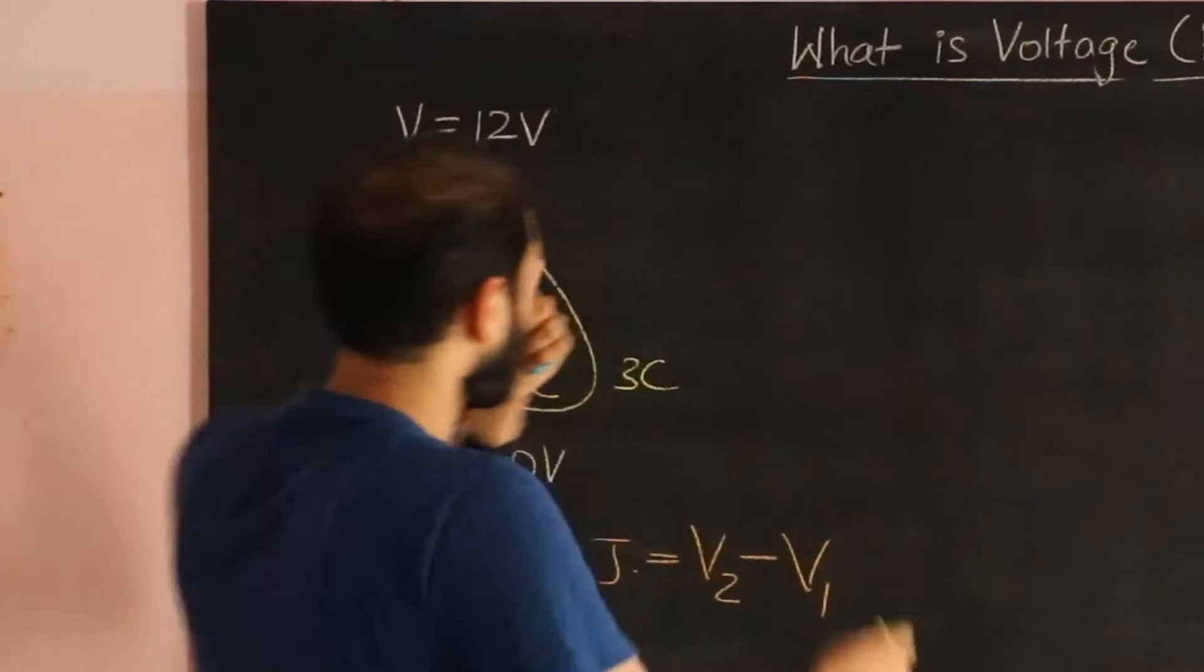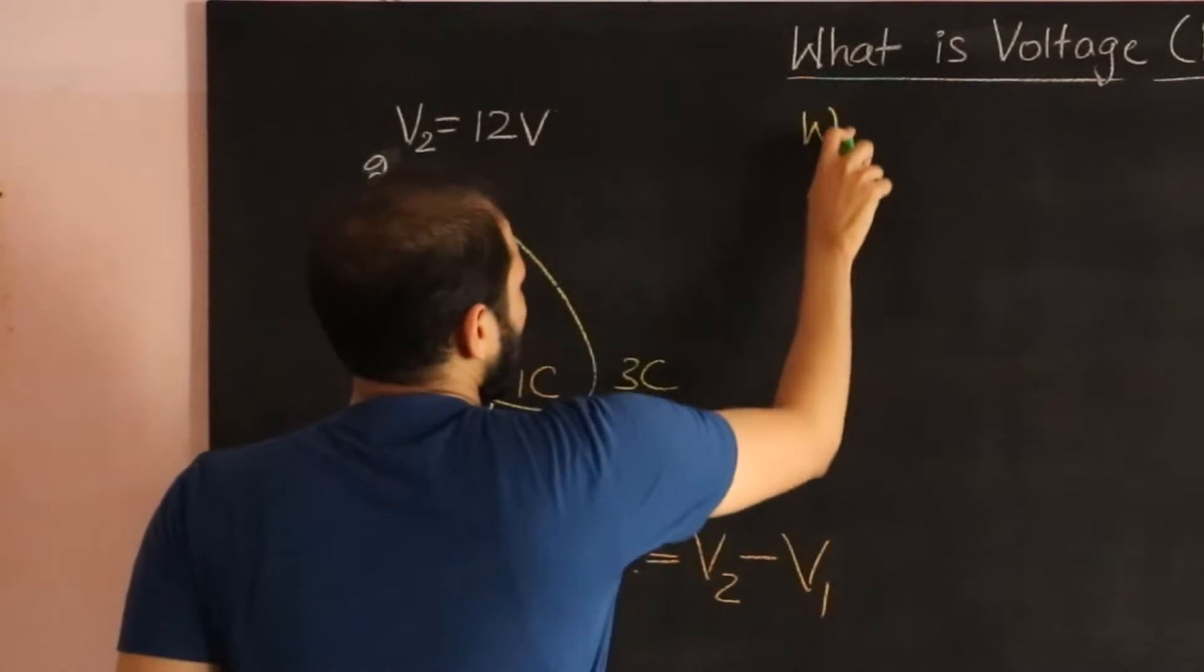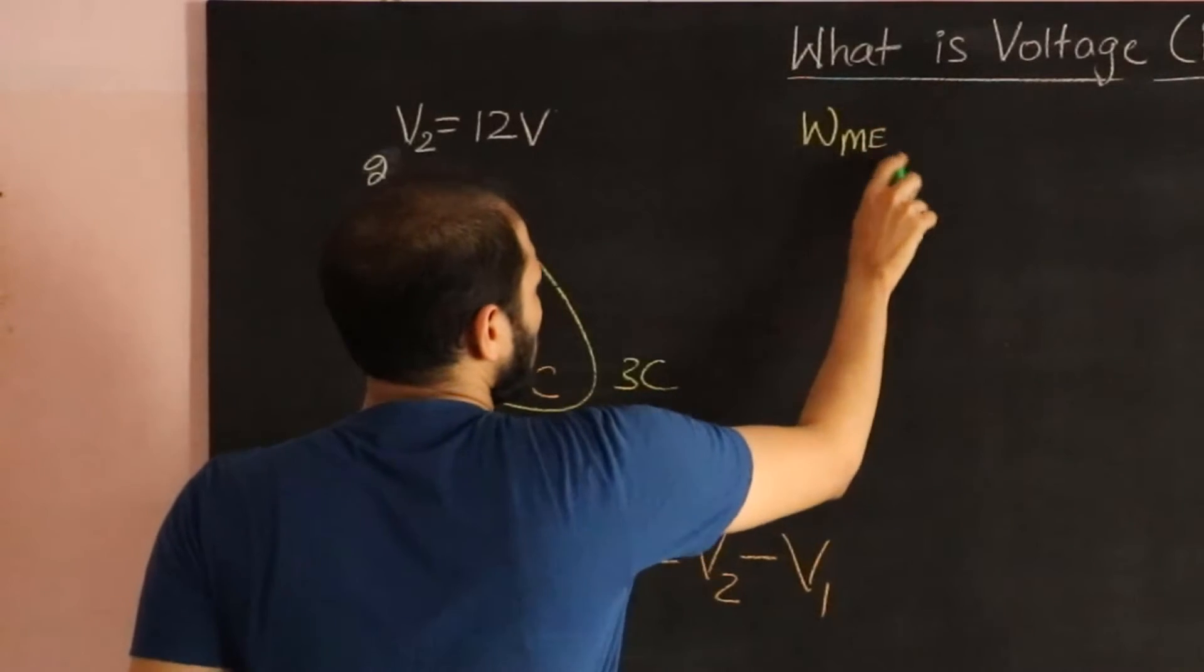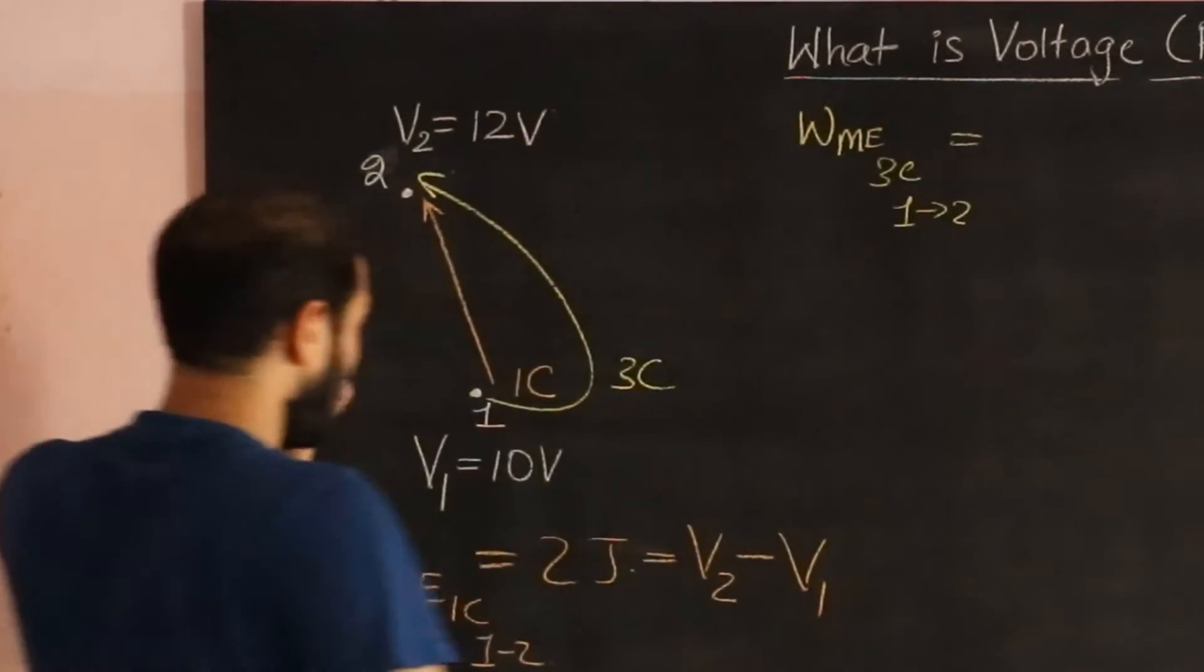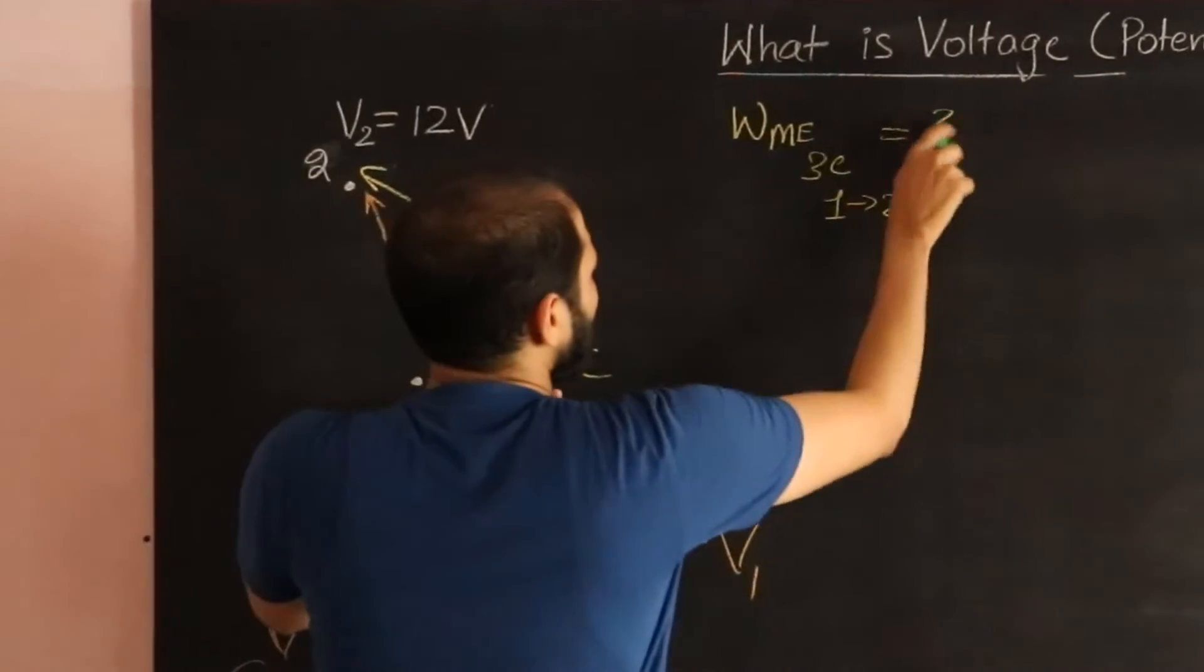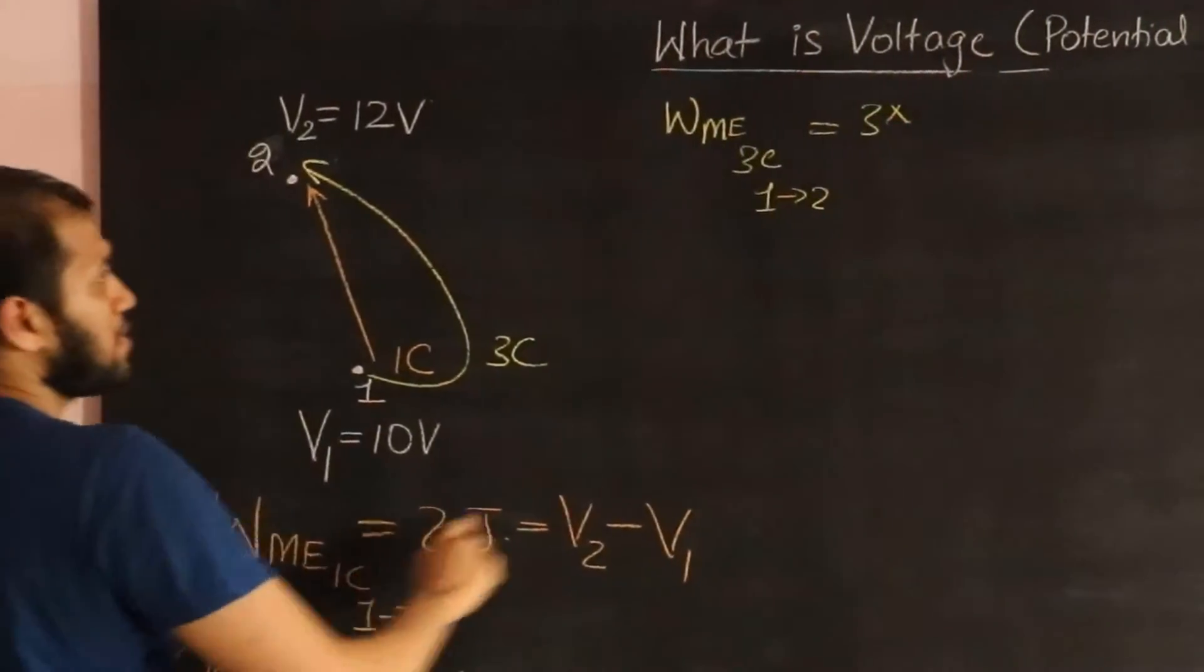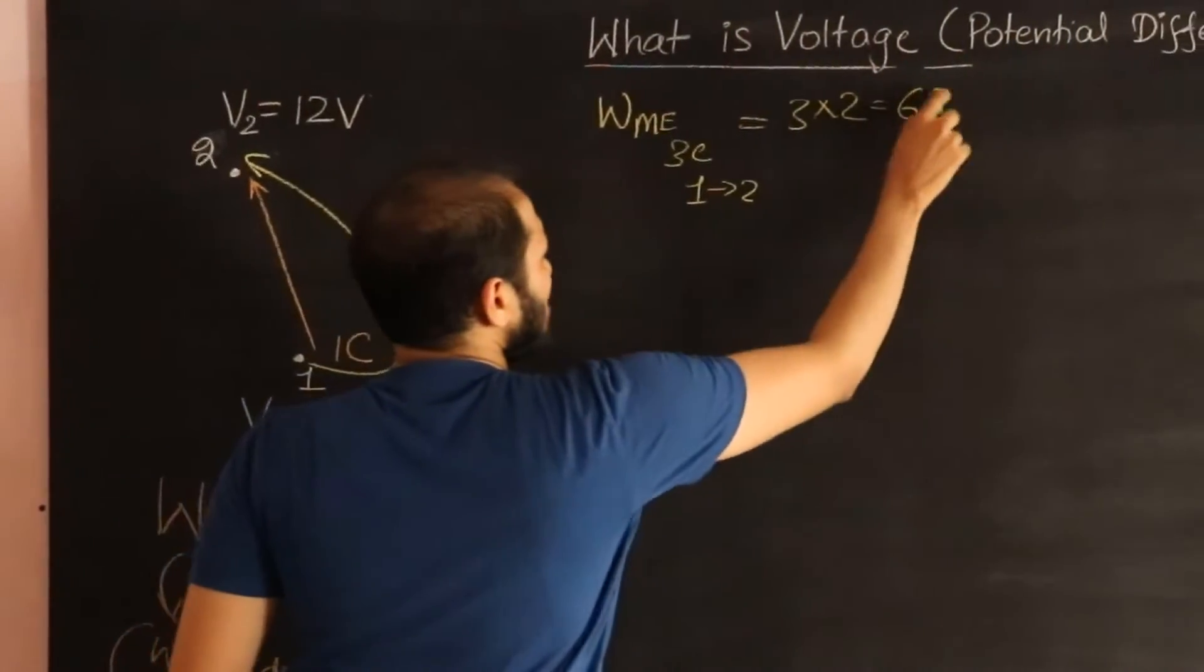So in this example, the work done by me to move 3 coulombs from 1 to 2 would be 3 times 2. That would be 6 joules.